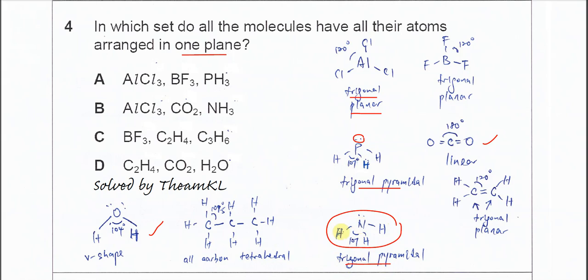For ethene (C₂H₄), we know that these two carbons are sp² hybridized carbon atoms and they have trigonal planar geometry. This means all these hydrogen atoms will be in one plane with the carbons, so the whole molecule is a planar molecule. It's one plane.